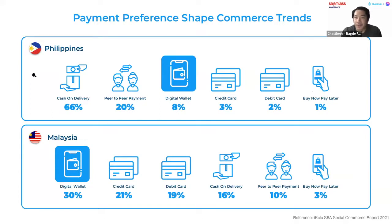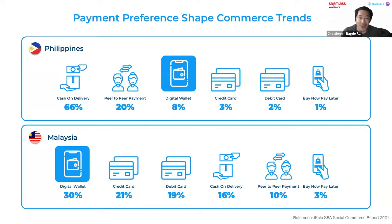Cash on delivery is still the preferred mode of payment in the Philippines at 66%, meaning six out of ten social media purchases are still COD. This makes sense — it would be risky for couriers to carry large amounts of cash for high-value transactions. However, this doesn't mean Malaysians have more money; the Philippines actually has a higher GDP than Malaysia.